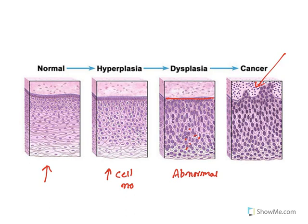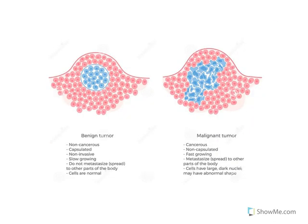In cancer, the basement layer is broken down. This is what is called invasion — cancer attacks the adjacent cells, and this is how cancer kills a human being.